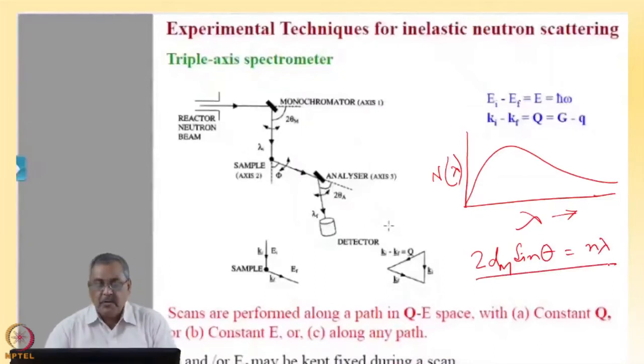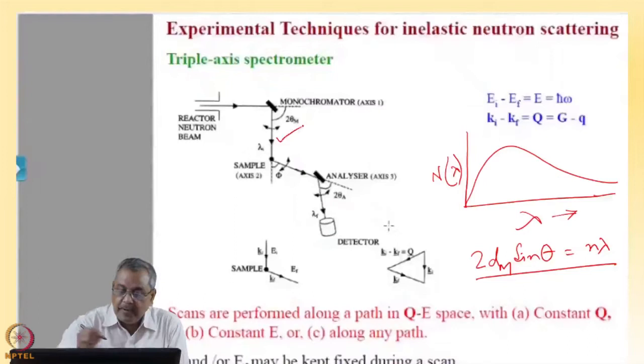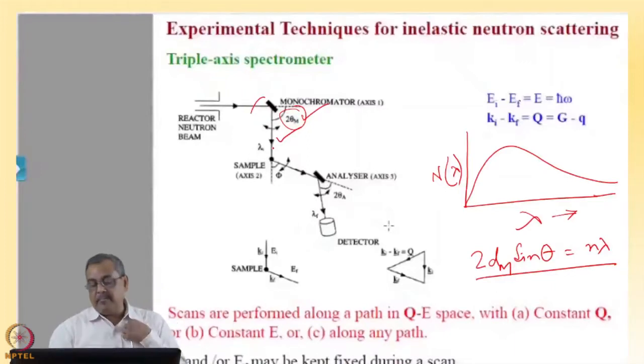We choose one specific monochromatic beam by choosing the plane of the monochromator and the angle with respect to the beam, and finally the total deviation which is 2θ monochromator. This is the deviation of the beam with the direct beam and this fixes the lambda.